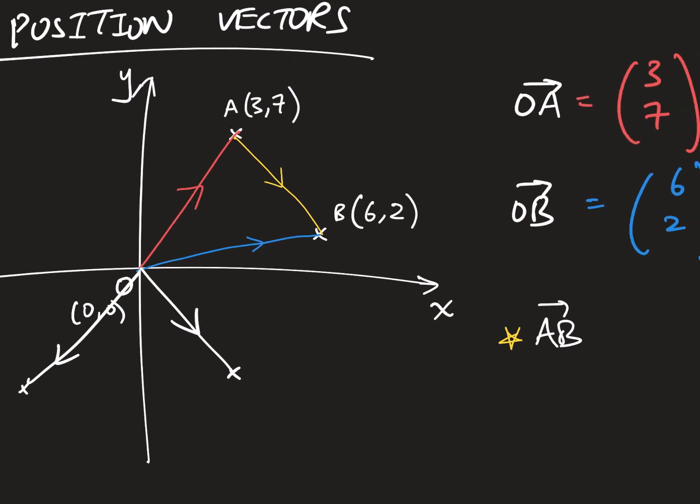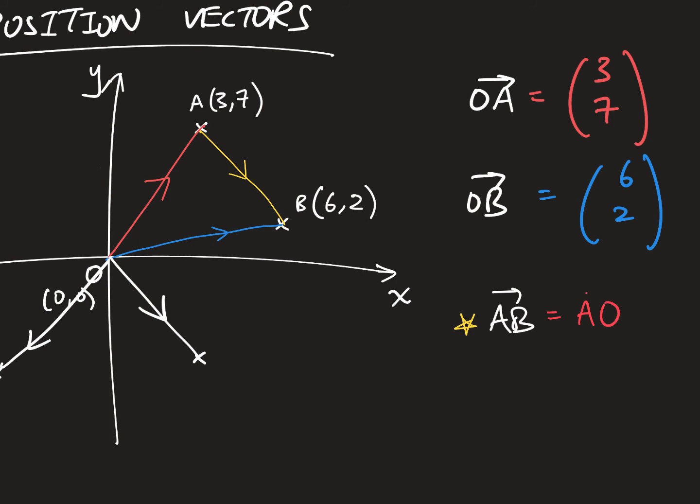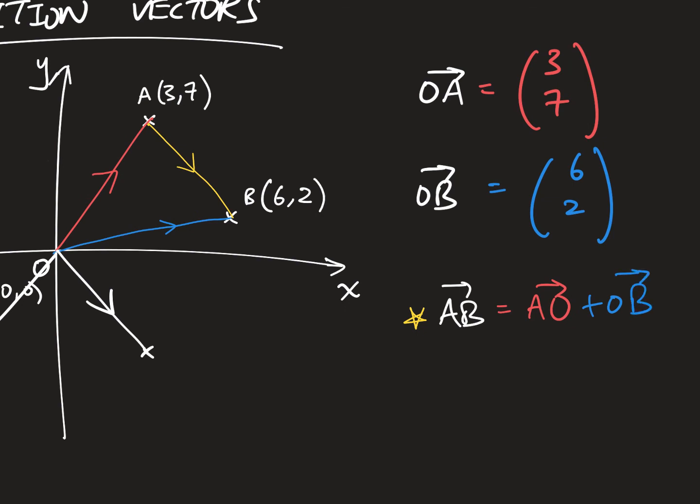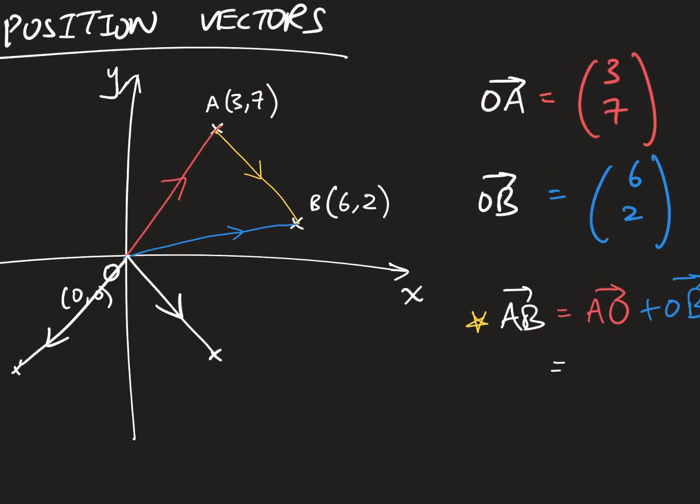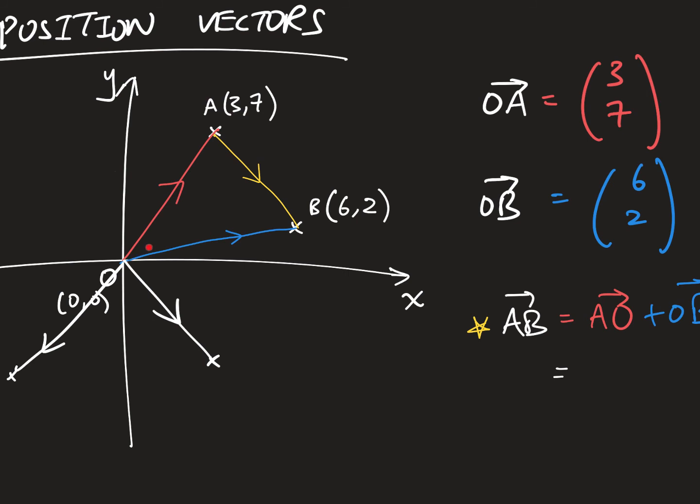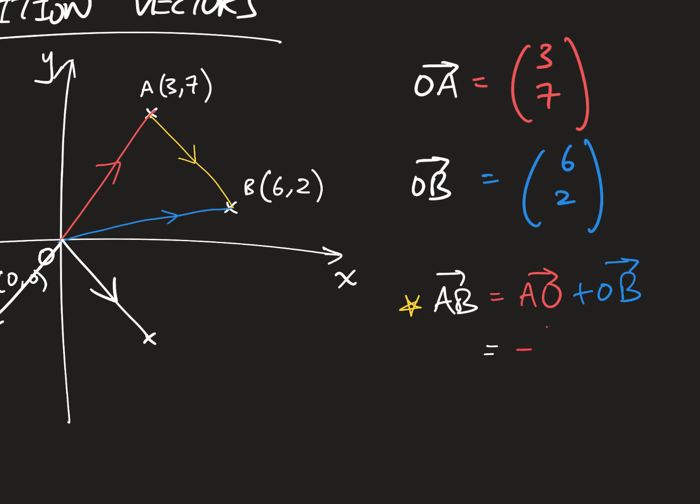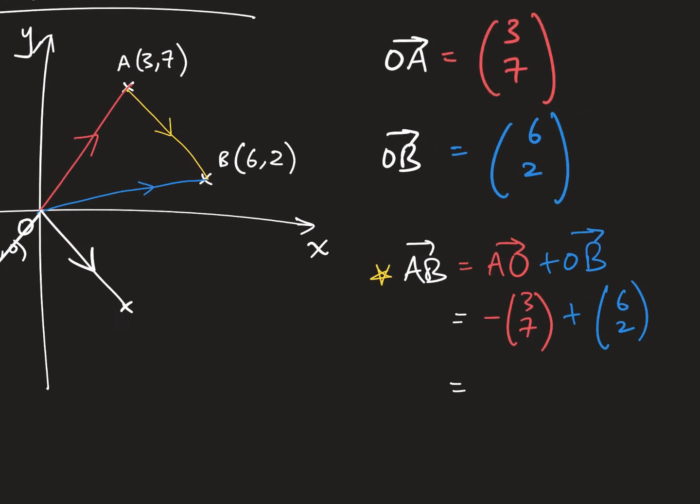So that basically tells me that AB can simply be A walk to O, and then from O, walk to B. And what is AO? AO is simply negative of OA. So I flip it around. And so, this is simply negative of OA, and I add OB. And this gives me AB, which is simply negative 3 plus 6, that gives me 3, and negative 7 plus 2, that gives me negative 5.